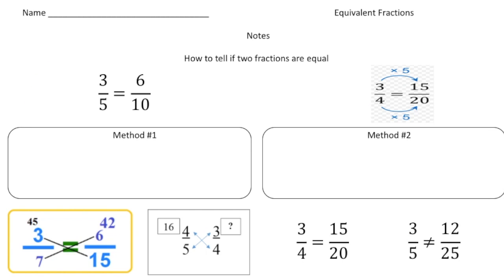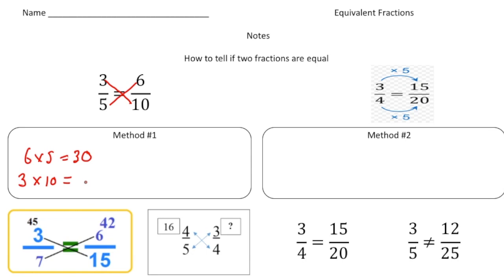The second part of this lesson, we're going to talk about how to tell if two fractions are equivalent. There are two different methods. For the first method, notice we have three fifths and six tenths — these fractions are equal. One way you can tell if two fractions are equal is if their cross products are equal. If I multiply six times five, that equals 30. And if I multiply three times ten, that also equals 30. This is a characteristic of equivalent fractions: the cross products are equal.